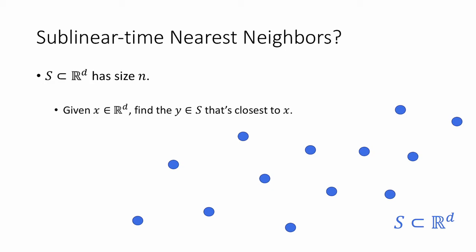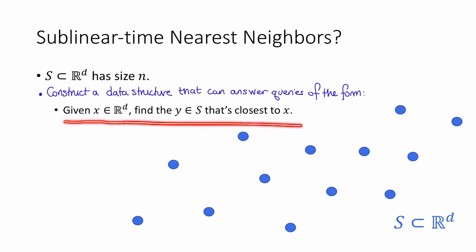But a sublinear time algorithm might be possible if we allow preprocessing. That is, we're going to slightly change our problem statement to the following. Once again, we have a set S of size N, subset of RD, and now we get to spend some time ahead of time to construct a data structure that hopefully doesn't take up too much space, and that can answer queries of the form: given some X in RD, find the Y in S that's closest to X.